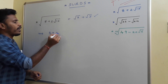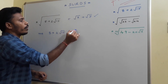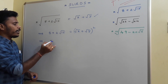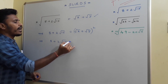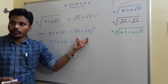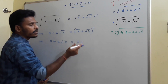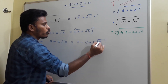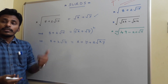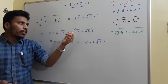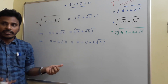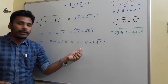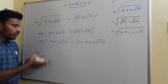Squaring both sides gives 8 plus 2 root 15 equals root x plus root y, whole square. On the right-hand side, apply the expansion: root x squared is x, root y squared is y, and 2ab becomes 2 root xy. So the right side becomes x plus y plus 2 root xy.